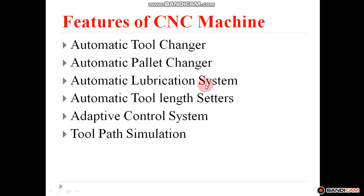The automatic lubrication system controls what quantity of lubrication is required and manages it automatically. The automatic tool length setter compensates for the different lengths of tools. The adaptive control system automatically controls the speed depending on the type of workpiece.